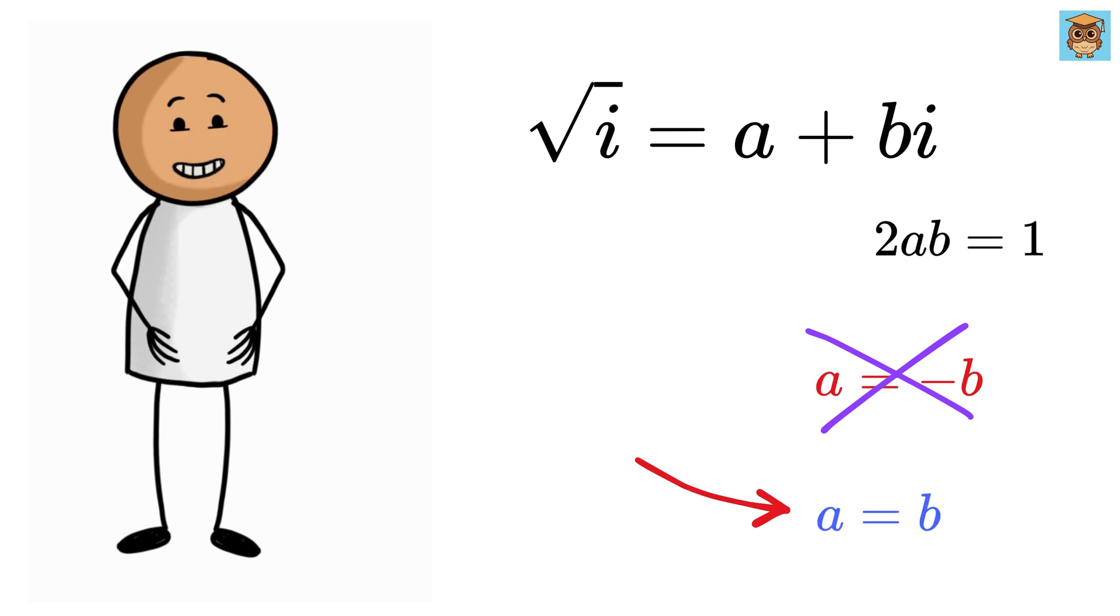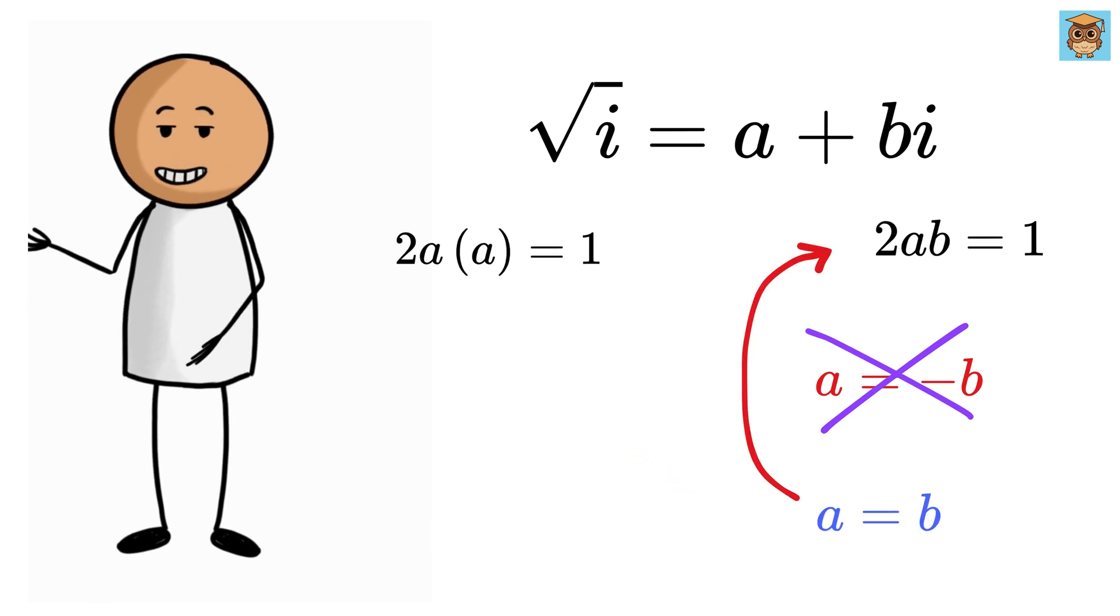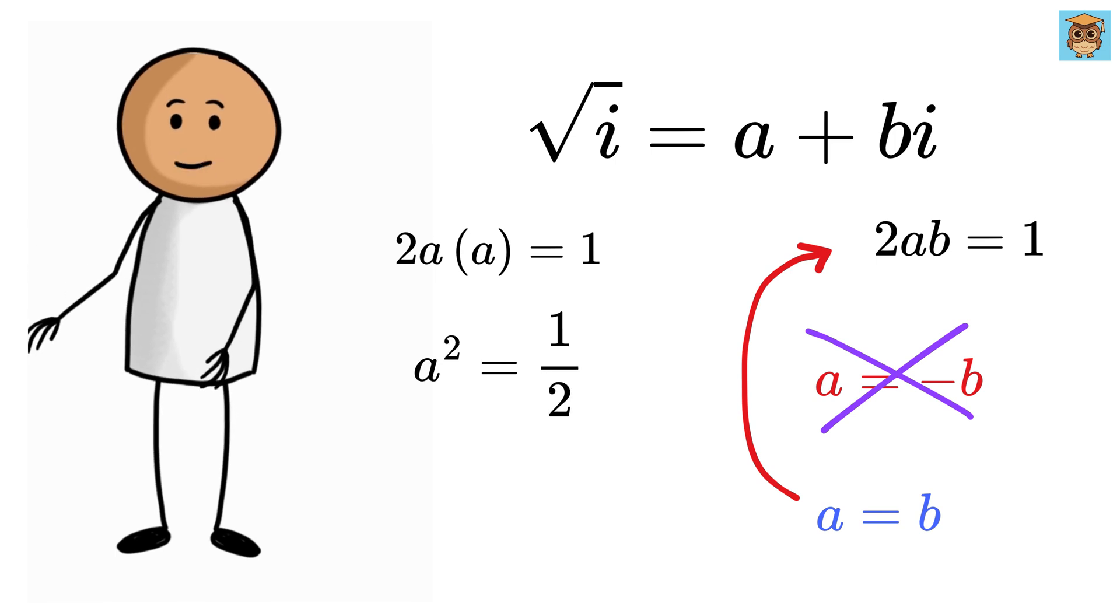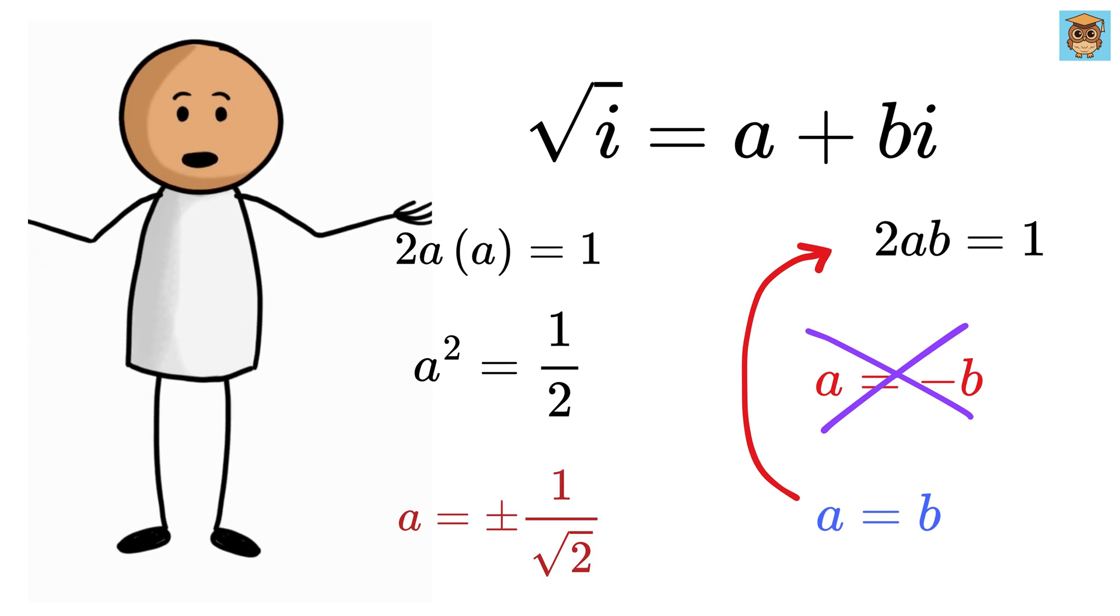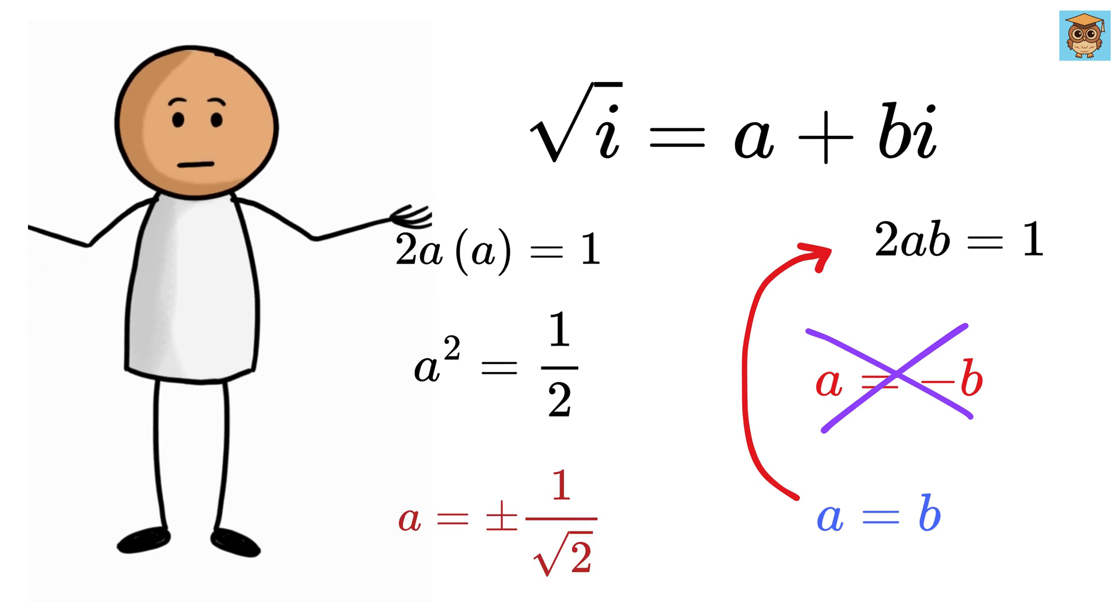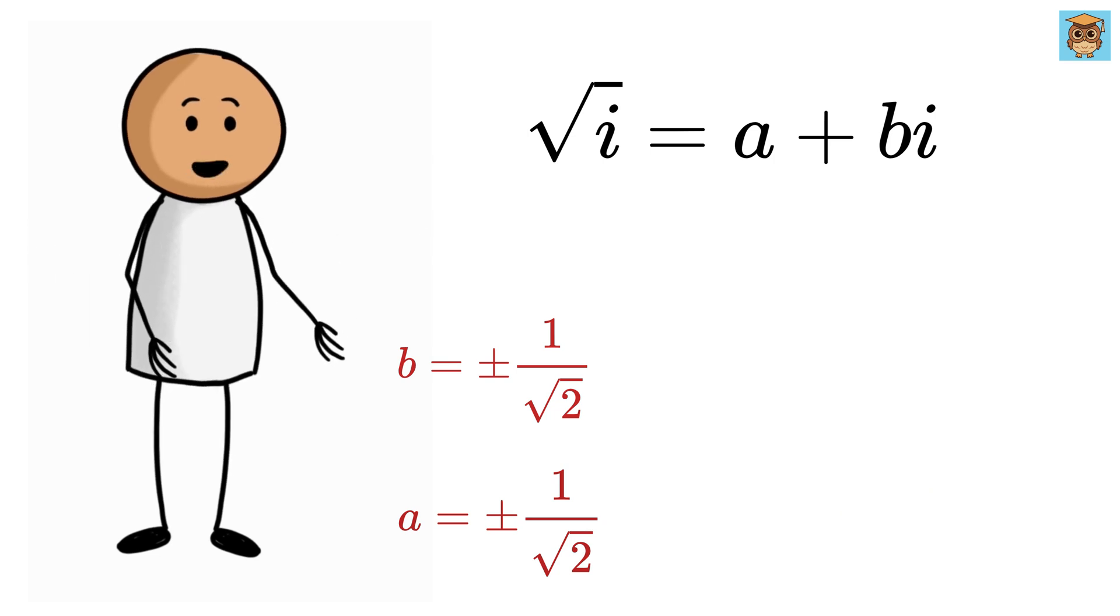Now let us check a = b. Put it here to get 2a × a = 1 or a² = 1/2. This gives a = ±1/√2 and therefore b is also equal to ±1/√2. And that's it.